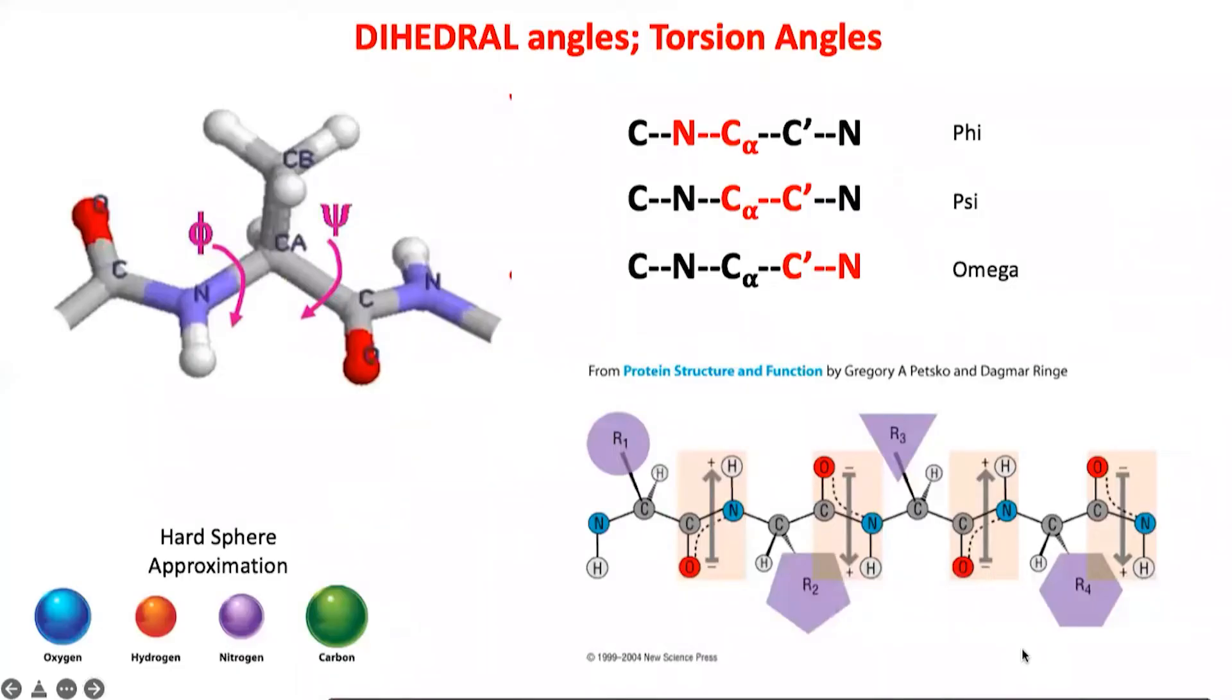Now let's go on to the concept of what is a dihedral angle. Here you see a small stretch of a ball and stick representation. This is another representation of a small stretch of a polypeptide, and again the main backbone is always the same: C prime, N, C alpha, C prime, N. So the backbone is always like this.